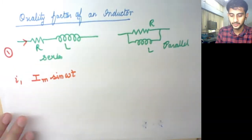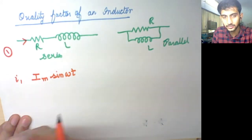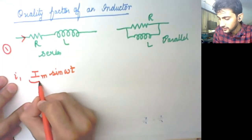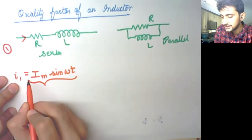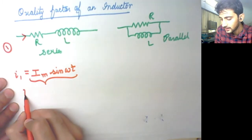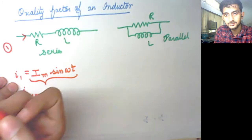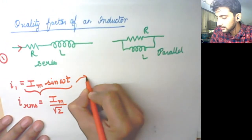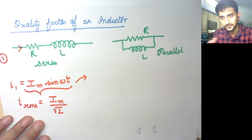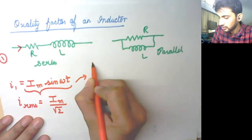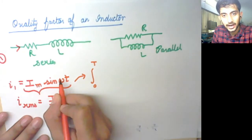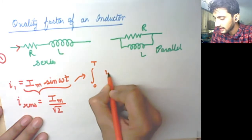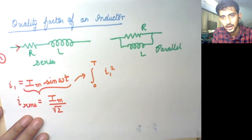In the series RL circuit, the current is Im sin(ωt). The maximum energy stored in one cycle — to find it, take the RMS of the current. I_RMS equals Im upon root 2. Root mean square means you take the square of the signal, find its mean over one time period, and then take the square root. The RMS value of Im sin(ωt) is Im upon root 2.